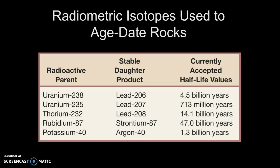Radiometric isotopes that are used to date rocks that we see are shown here. These are just a couple of examples of things that are used along with their known half-lives. Uranium-238 to lead-206, the half-life for that is about 4.5 billion years. Thorium-232 to lead-208 takes 14.1 billion years. You can see that these are very long time periods.